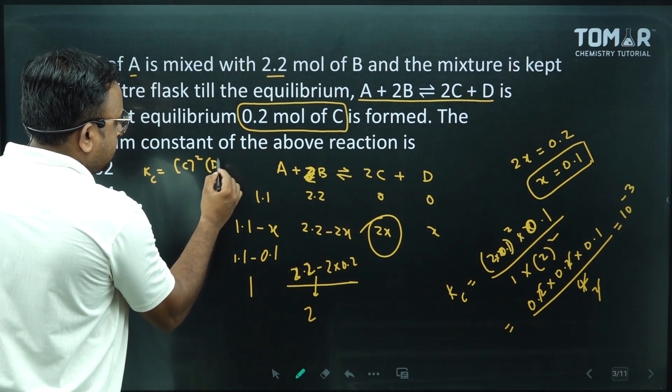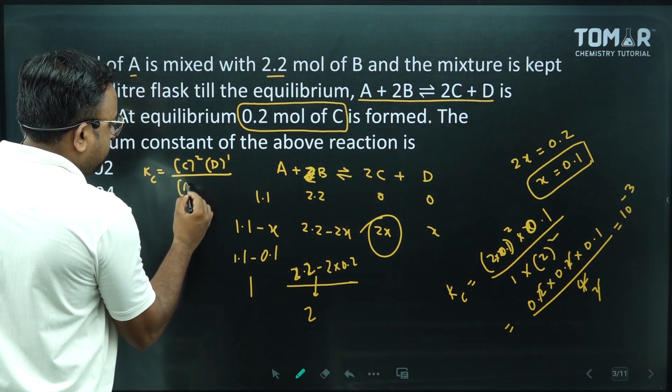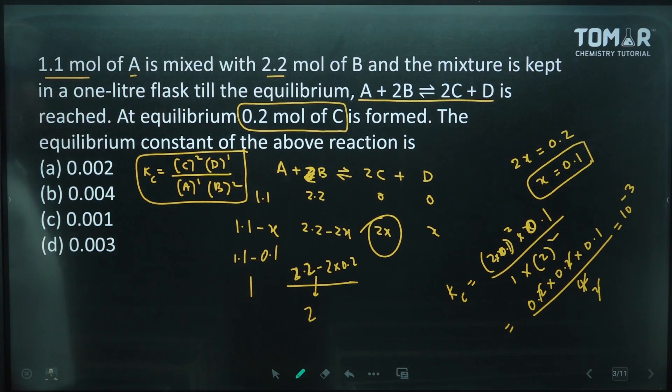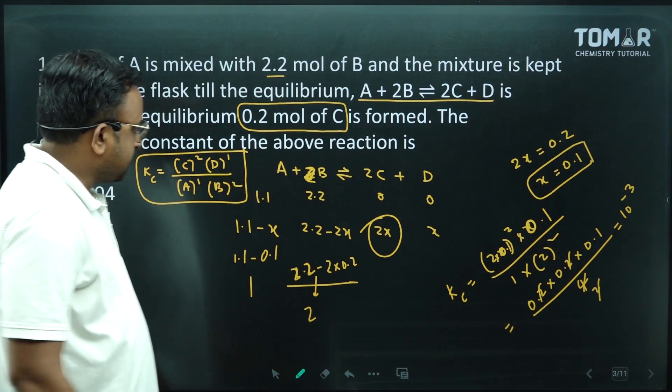This will become 10 to the power minus 2. 2, d1, a1, b2. This will be Kc's expression. So the option will be C.